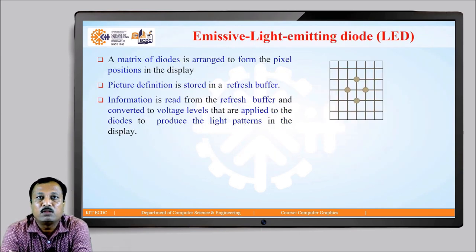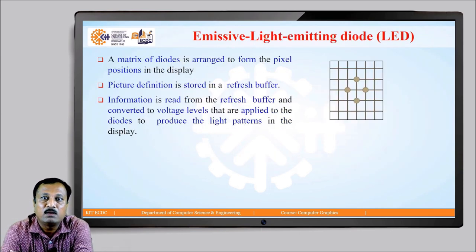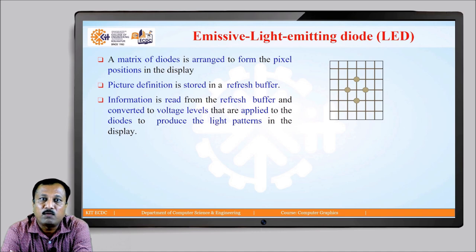The third type of display device using emissive technology is the LED, or light emitting diode. It consists of a matrix of diodes arranged to form pixel positions in the display. Picture definition is stored in a refresh buffer, and the information is read from the buffer and converted to voltage levels applied to the diodes to produce light patterns. At each intersection of diodes, a visible glowing pixel dot can be seen on the surface of the LED device.